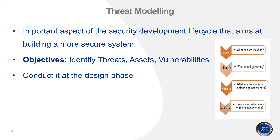Threat modeling is an important aspect of the security development lifecycle that aims at building a more secure system. It enables the organization to build security requirements into the system or device and does not address cybersecurity as an afterthought — therefore it is conducted at the design phase. Threat modeling aims at identifying assets, analyzing threats and vulnerabilities, and mitigating them. It can be performed in four steps: diagram (what are we building), identify threats (what could go wrong), mitigate (what are we doing to defend against threats), and validate (how have we acted on each of those steps).